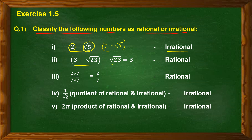Next we have 3 plus root 23 minus root 23. Here plus root 23 and minus root 23 cancel each other, and we are left with 3, which is a rational number. Next is 2 into root 7 divided by 7 into root 7 — root 7 and root 7 cancel, leaving us with 2 by 7, which is of the form p by q, so it is a rational number.